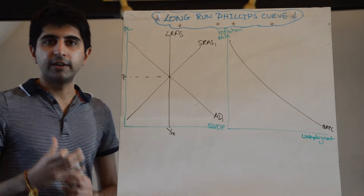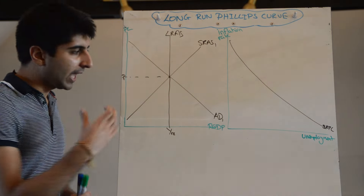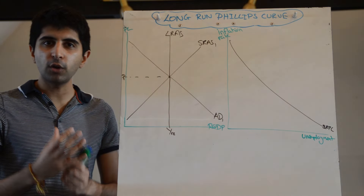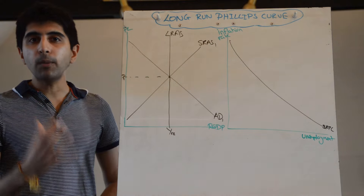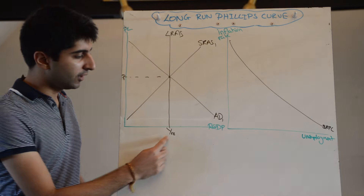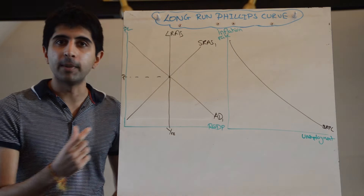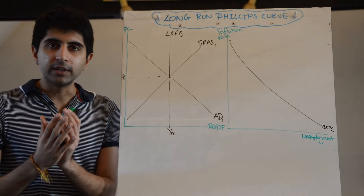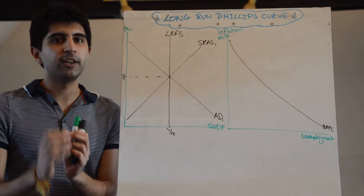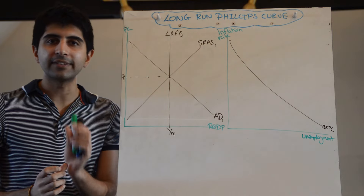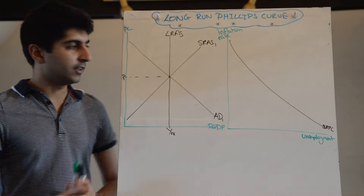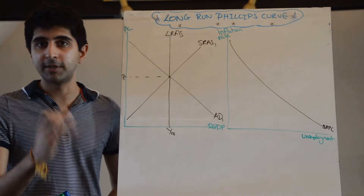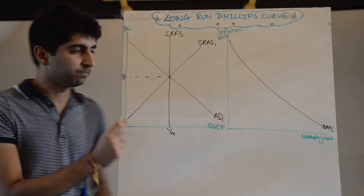Let's take the long-run idea of the Phillips Curve, adapted by monetarists to show that in the long term output will always return to the full employment level. You will need to watch my video on the classical AD and AS to understand how the long-run Phillips Curve can be derived from the classical model.